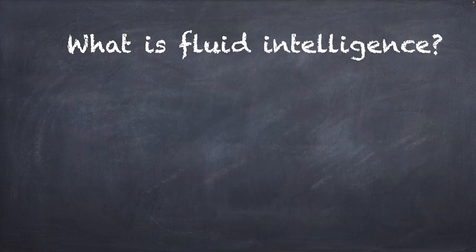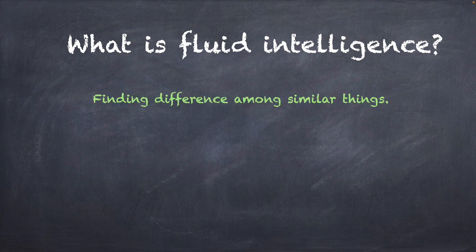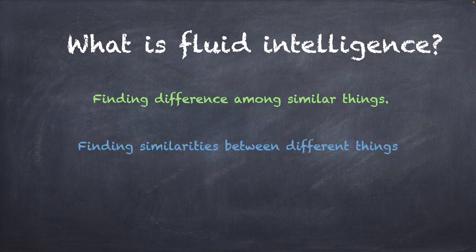What is fluid intelligence? Finding the difference between similar things and finding similarities between different things — that is the definition of fluid intelligence. If you can train your brain to build these two fundamental skills, you will really build your fluid intelligence quotient.